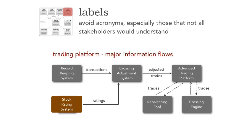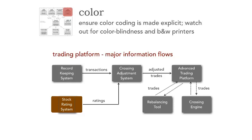Notice now what's happening. The record keeping system sends transactions to the crossing adjustment system. The crossing adjustment system adjusts trades and sends those to the advanced trading platform, the ATP. And then the SRS — which is the stock rating system — sends ratings over there. Trades go to the rebalancing tool and the crossing engine. Now we have an understandable architecture, but we're not quite done yet.